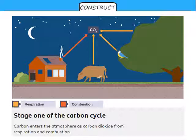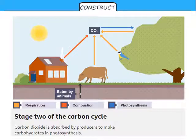For stage two, we've added a new color of arrow, a blue arrow now, which is carbon dioxide being taken in. In stage two, carbon dioxide is absorbed by producers to make carbohydrates in photosynthesis. Carbohydrates contain carbon, so the gas form of carbon in carbon dioxide is being taken in and it's being turned into solid carbon as part of a carbohydrate.